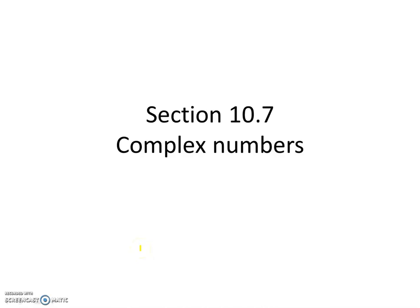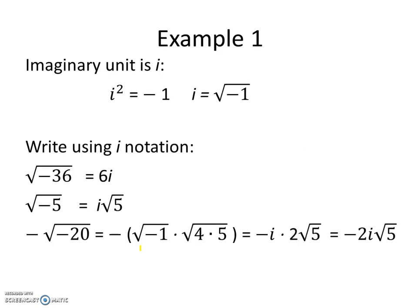Today we're going to be looking at section 10.7, Complex Numbers. To begin with, on example 1, the imaginary unit is i. i squared equals negative 1, and i equals the square root of negative 1.